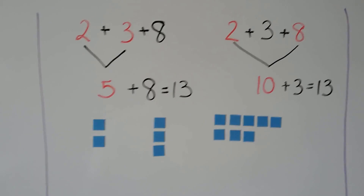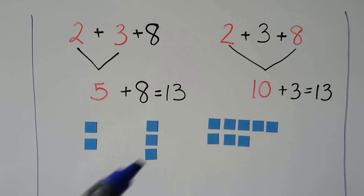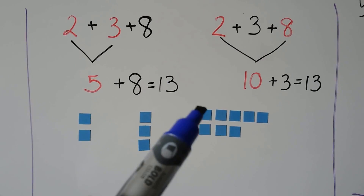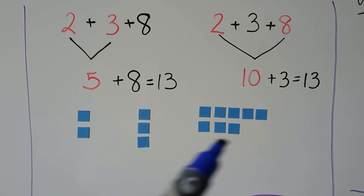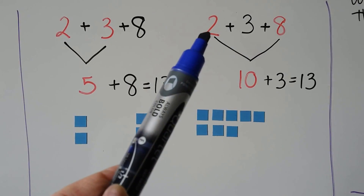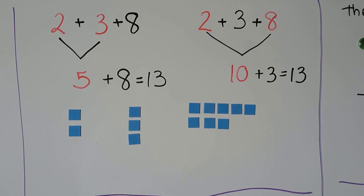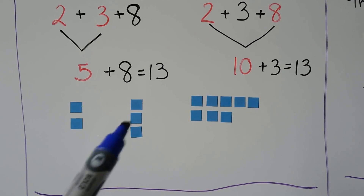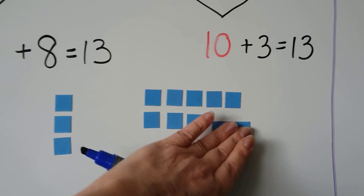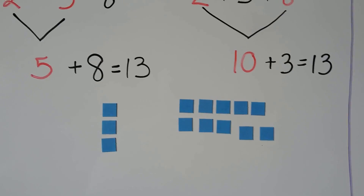If we want to add 2 plus 3 plus 8, we can add the 2 plus 3 first and make a 5. Then we can add the 8 — that'll be 13. We could also add the 2 from this side and the 8 all the way from this side together to make a 10. Then add the 3. And if we add the 2 and the 8, that's going to make a 10, then 13. The sum is the same.